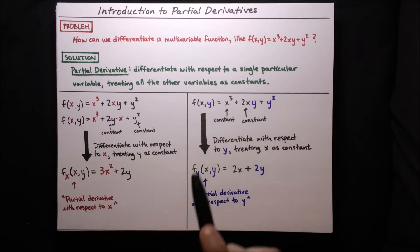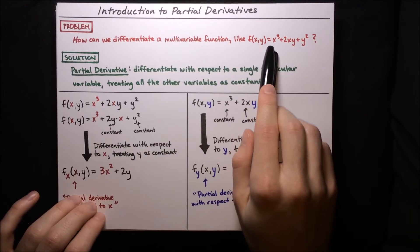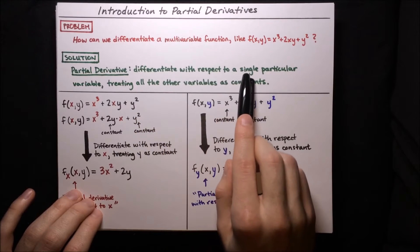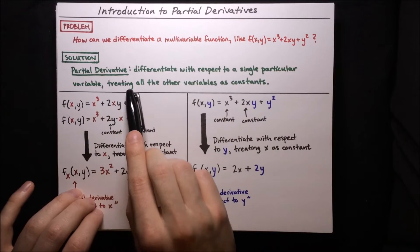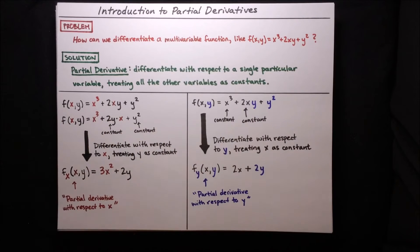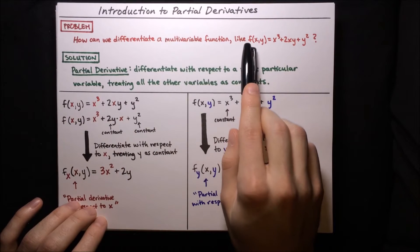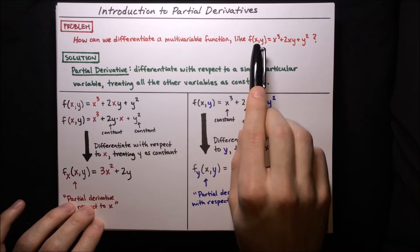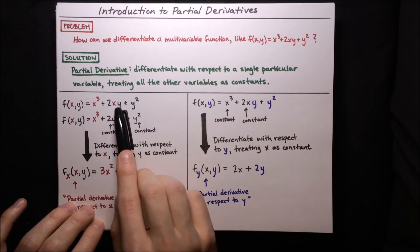The solution is just to differentiate this function as though it were a single-variable function. We take the partial derivative, meaning we differentiate with respect to one particular variable and treat all the other variables as constants. For example, to take the partial derivative with respect to x, we think of x as the only true variable and treat y as a constant.